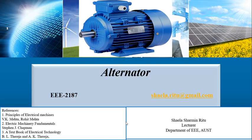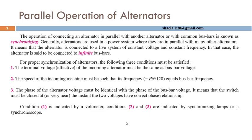In today's session, I am going to discuss about the parallel operation of alternators. Parallel operation of AC generators is slightly more complex compared to DC generators. In DC generators, frequency and phase sequence do not need to be considered, but in case of AC generators, we have the concept of frequency as well as the concept of phase sequence.